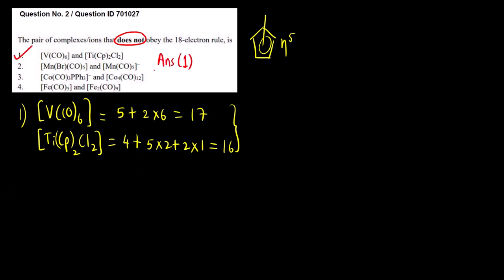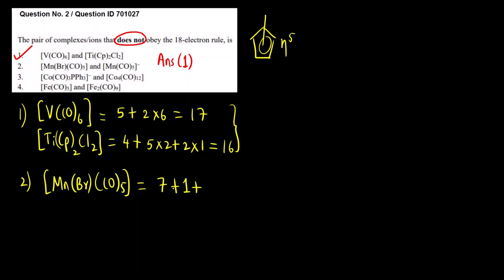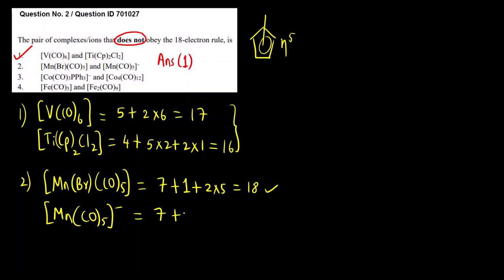Both V(CO)6 and Ti(Cp)2Cl2 do not follow the 18-electron rule, so the correct answer is option 1. Let's verify the others: Mn(Br)(CO)5 gives 7+1+10 = 18 electrons, and [Mn(CO)5]⁻ gives 7+10+1 = 18 electrons. Both follow the 18-electron rule, confirming option 2 is incorrect.